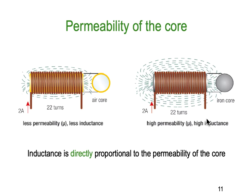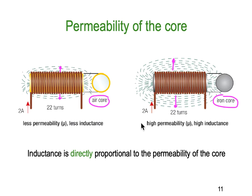Permeability: on the left we have a coil wrapped around in air — air is the core, so it has less permeability and therefore less inductance. On the right hand side we have much more magnetic field visible in both directions, compared to only a very small amount on the left. That difference is due to having air as the core versus iron as the core. Inductance is directly proportional to the permeability of the core — the better the core conducts a magnetic field, the higher the inductance.